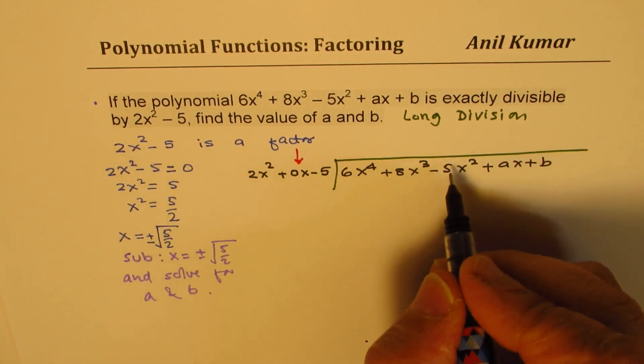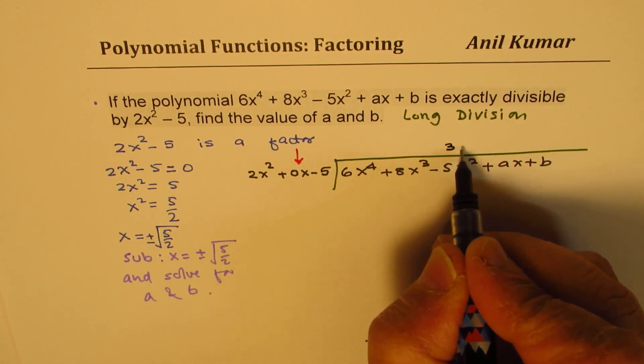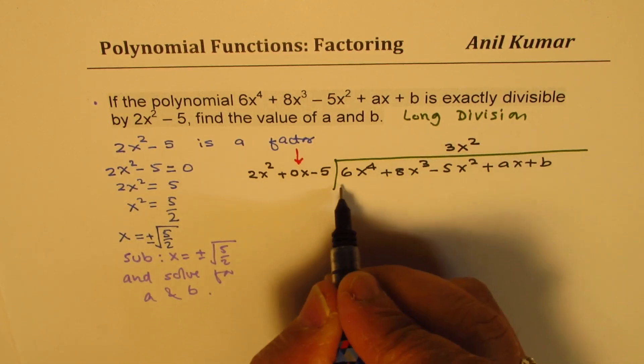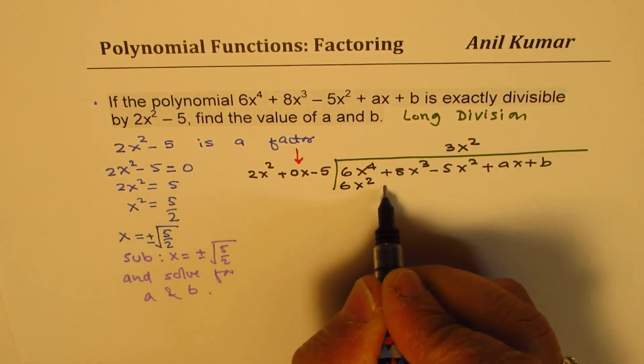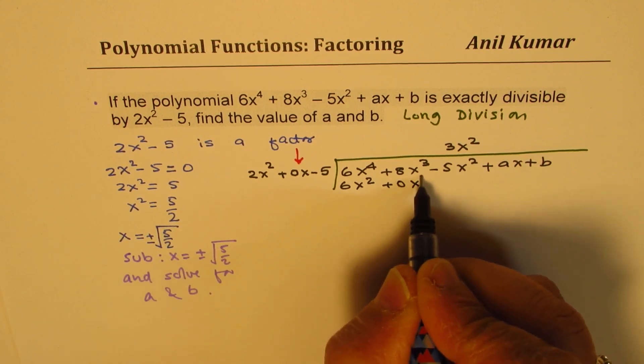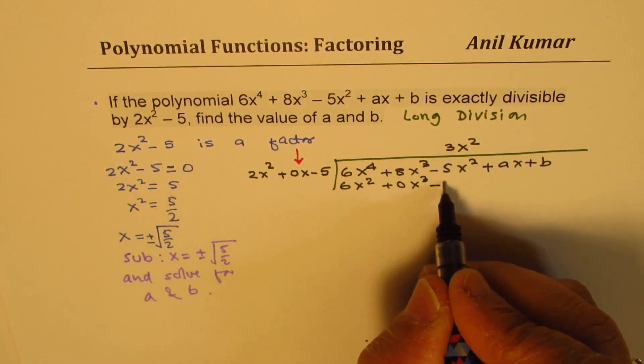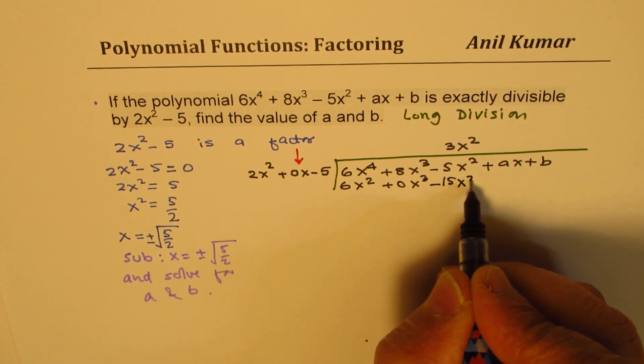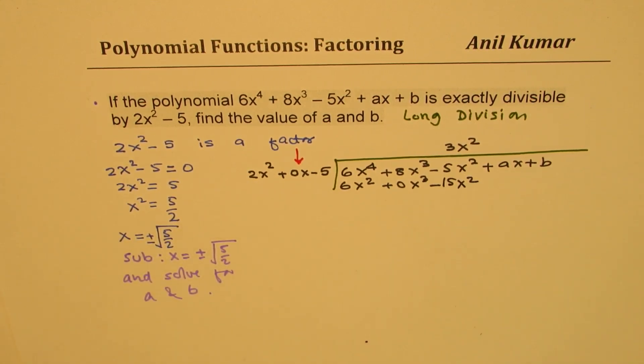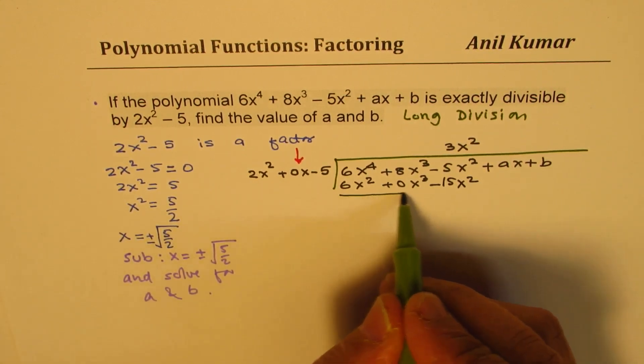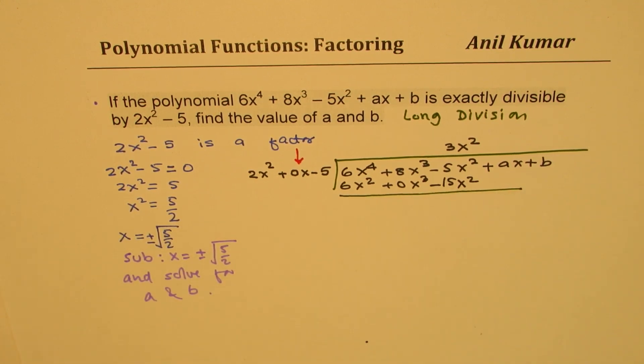6x to the power of 4, that means we will take this as 3x squared, multiplying we get 6x to the power of 4 plus 0x cubed minus, this becomes 15x squared. And now let's take the difference once again and then continue.